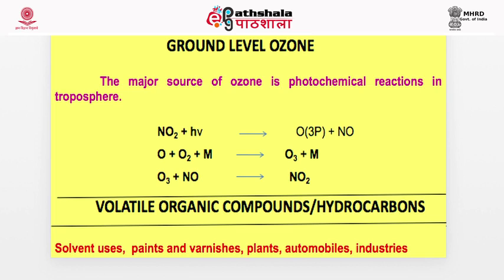Ozone is an interesting gas with dual roles. In the stratosphere it is a savior of life, but at the tropospheric ground level it is a toxic pollutant. Ground-level ozone formation: NO₂ is photolyzed by visible radiation at ~390 nm, dissociating to give a ground-state oxygen atom and NO. This oxygen atom reacts with O₂ in the presence of a third body M (which removes extra heat energy) to form O₃. Ozone then reacts with NO to regenerate NO₂. This three-step cycle continuously produces ozone, with NO₂ being used up and regenerated.